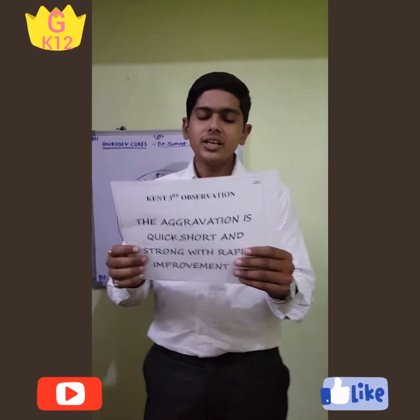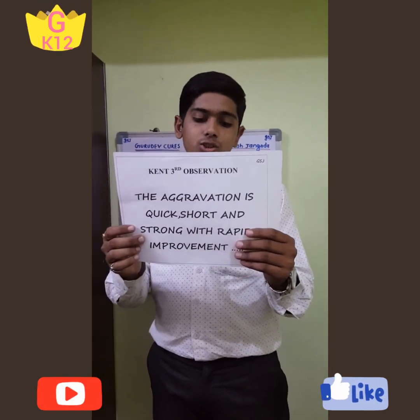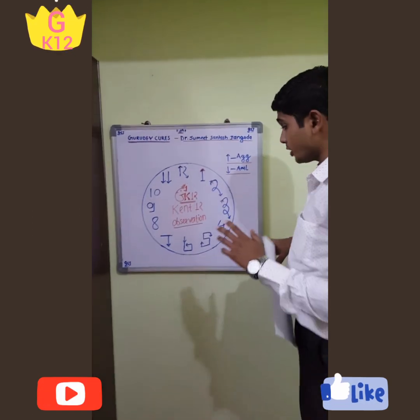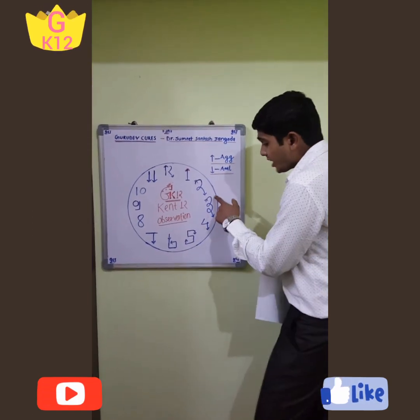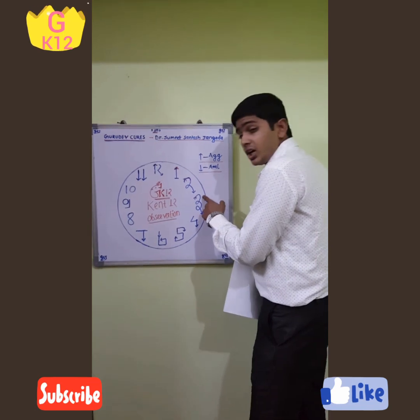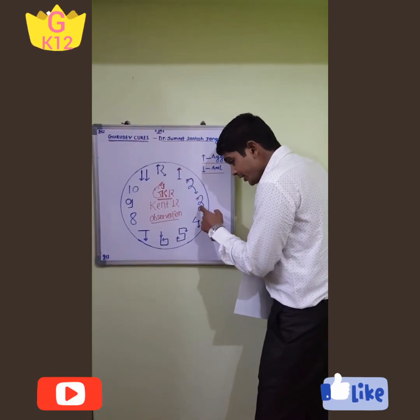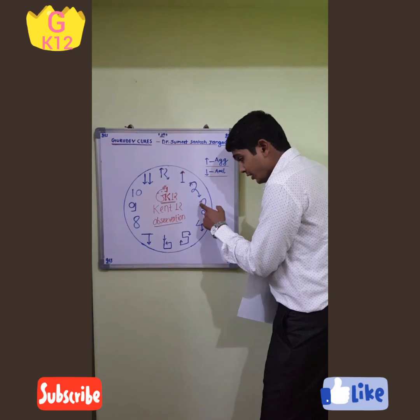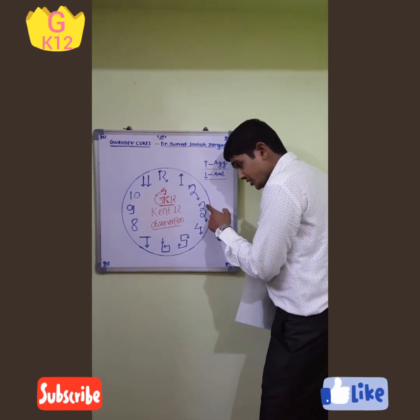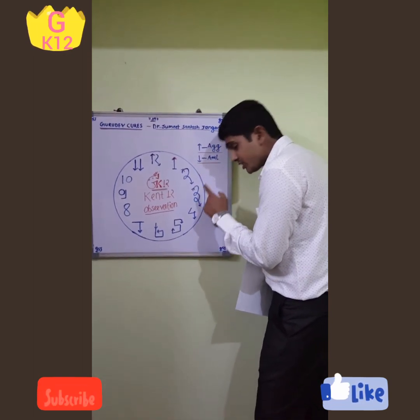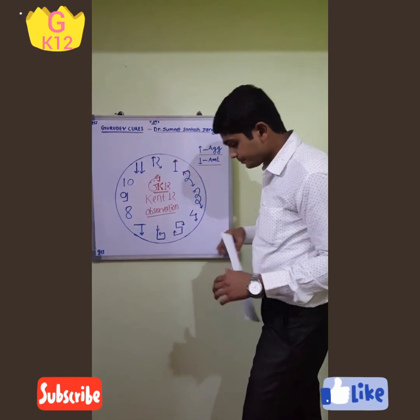In the third observation, Dr. Kent said that the aggravation is quick, short, and strong with rapid improvement. What is happening here? The aggravation is quick, short, and strong, and it quickly moves into an amelioration condition in a rapid way. This is a favorable pattern indicating a well-selected remedy acting efficiently.